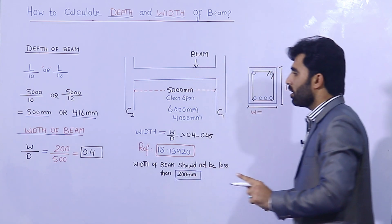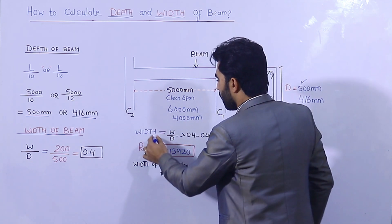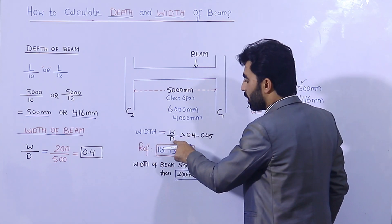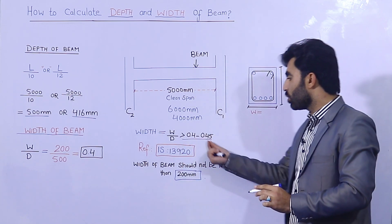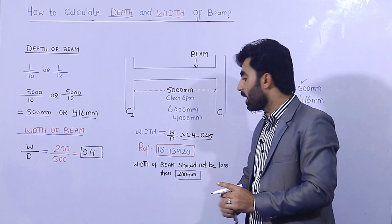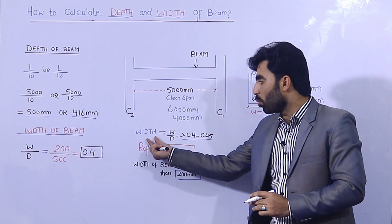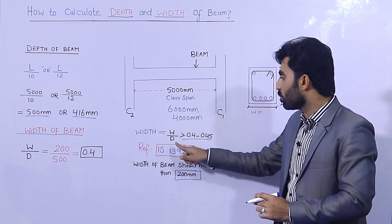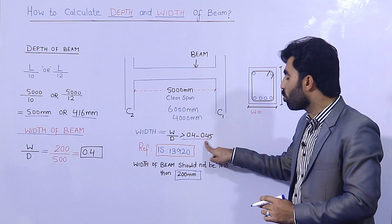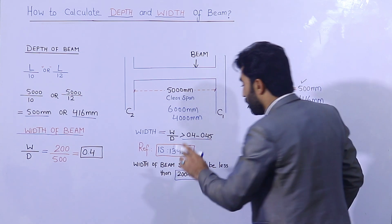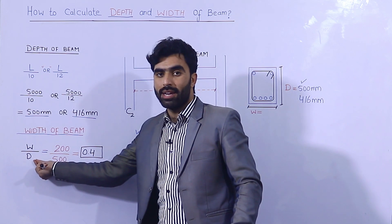Now, what should be the width of the beam? The width of the beam can be found using the ratio: width divided by depth, which should be greater than 0.4 to 0.45, from the reference of IS code 13920. Also remember that the width of the beam should not be less than 200 mm.